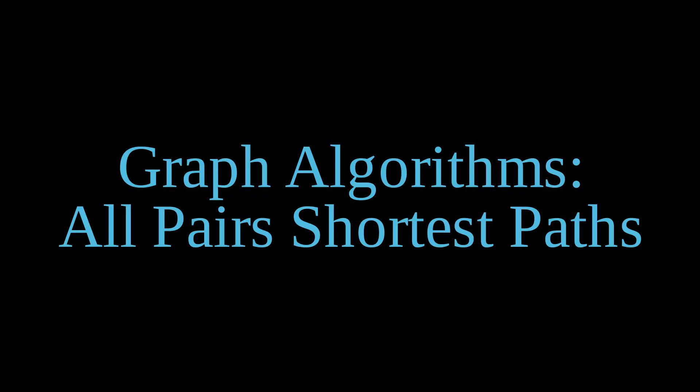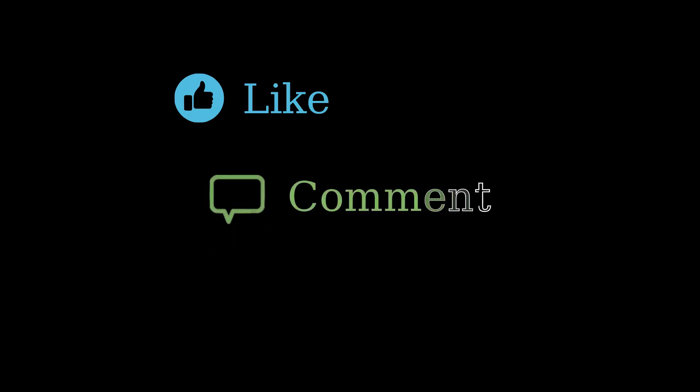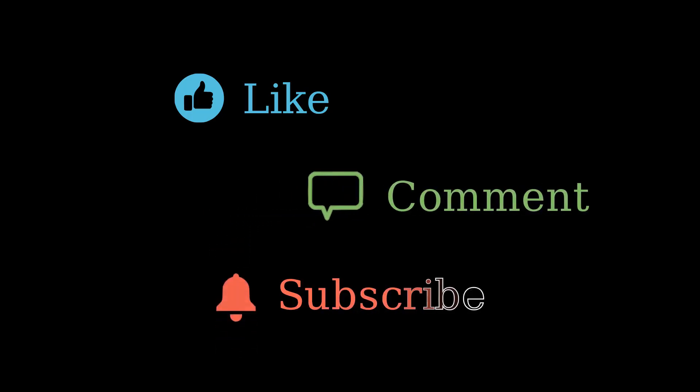Hello everyone, and welcome back to our series on algorithms. In the previous video, we discussed the single source shortest paths problem and how it can be solved using Dijkstra's algorithm and Bellman-Ford. In this video, we will extend this problem to finding all shortest paths between every pair of vertices in what's known as the all-pairs shortest paths problem. If you enjoyed this lecture, be sure to like, comment, and subscribe. With that, let's begin.